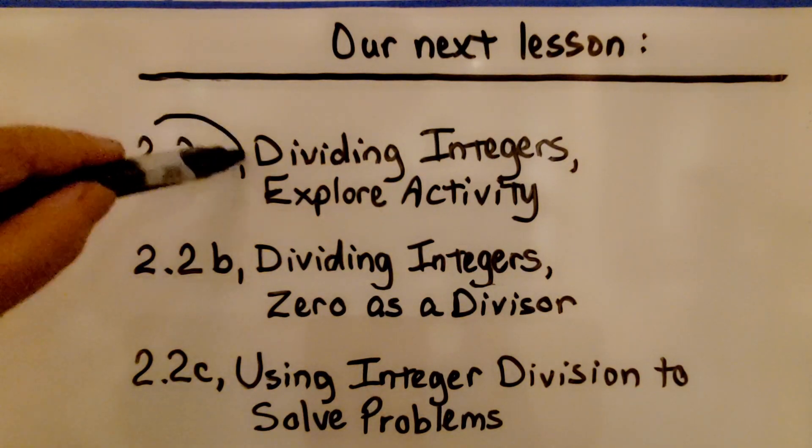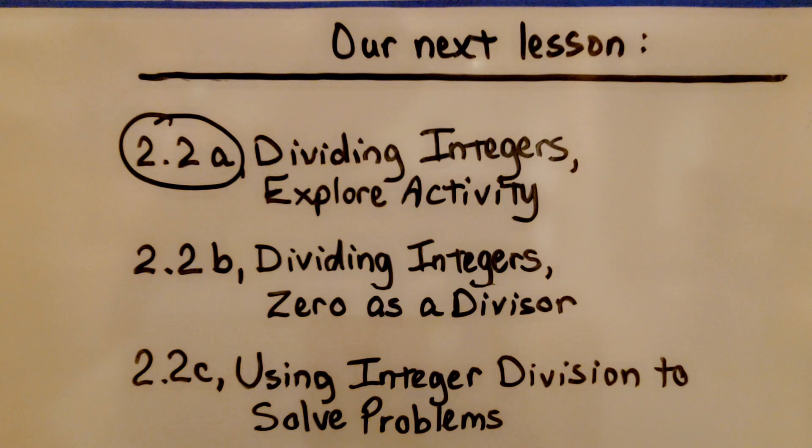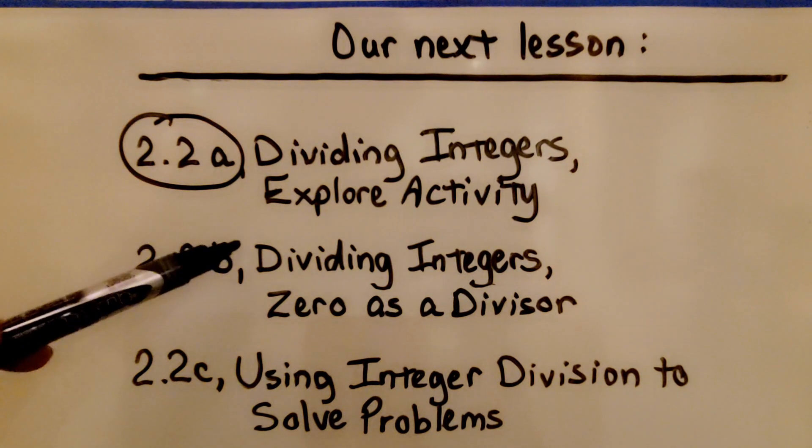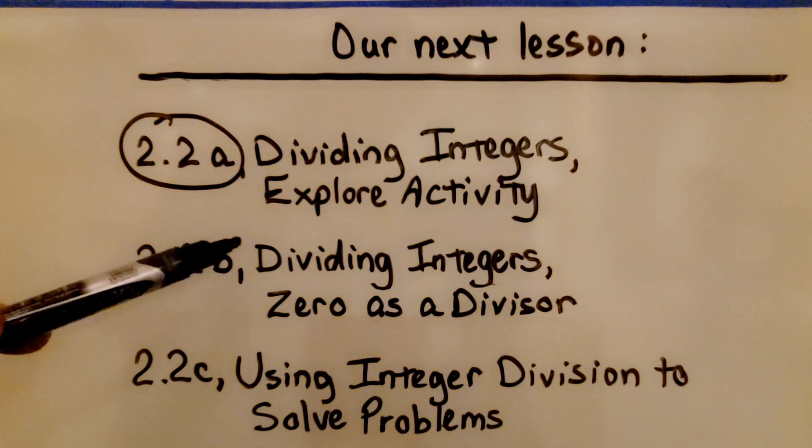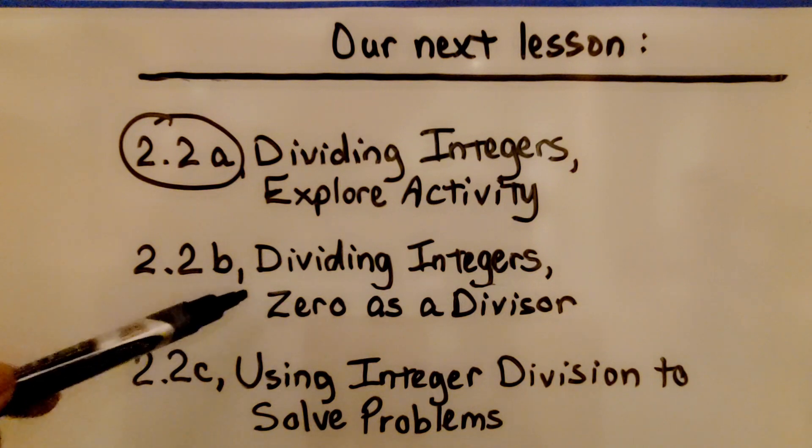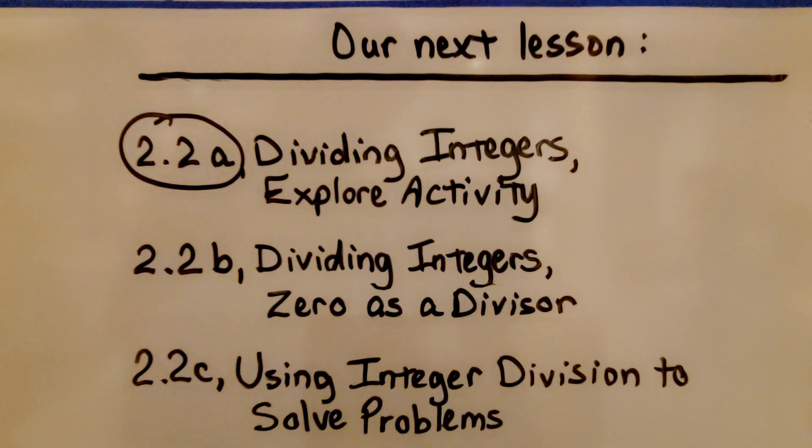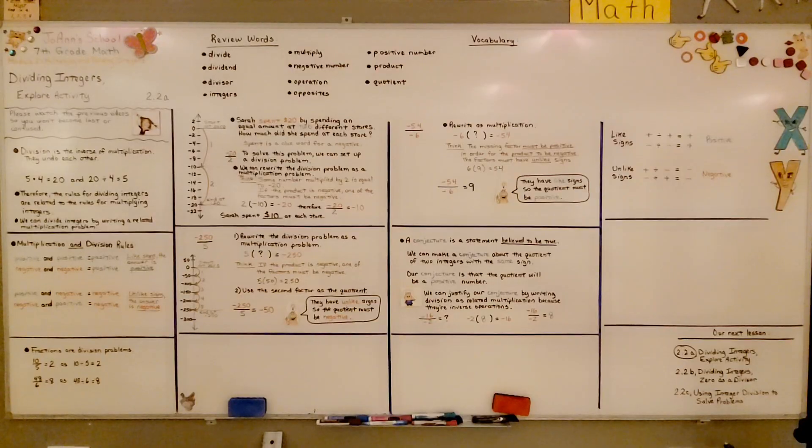We finished 2.2a. We're going to move to 2.2b and talk about dividing integers. We're going to talk about absolute value and zero as a divisor. Keep trying your best. I'm proud of you for watching math videos. And join me for our next lesson. Bye!